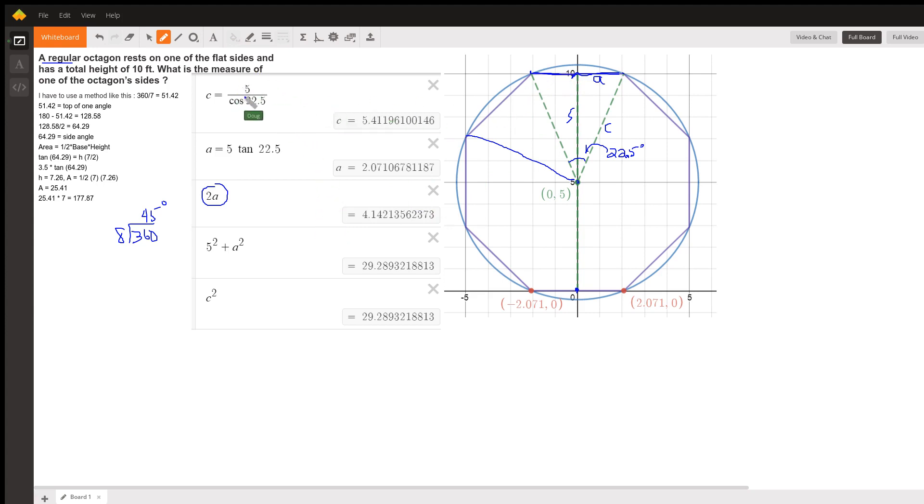Then I tested with the Pythagorean theorem to make sure that 5 squared plus a squared equals c squared, and indeed it does. So it looks like this is your answer right here.